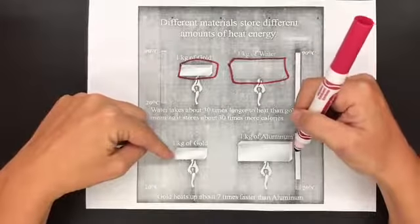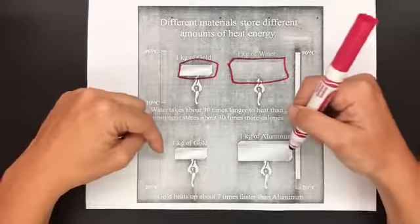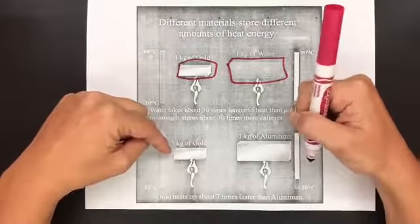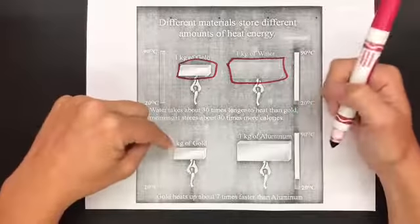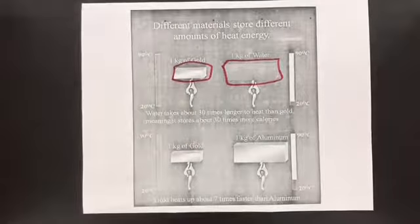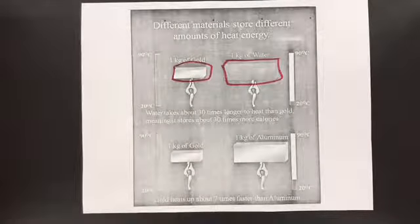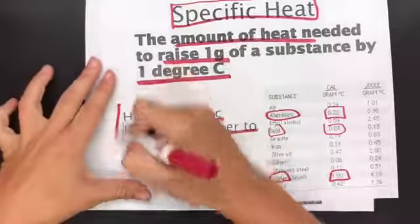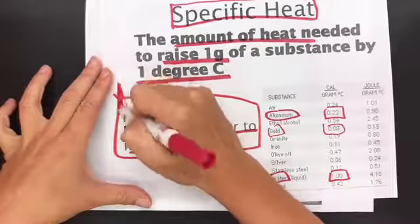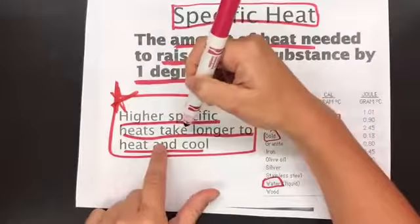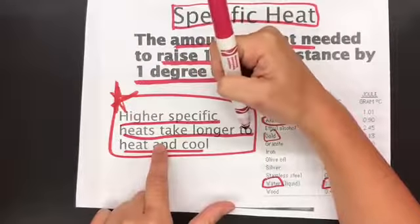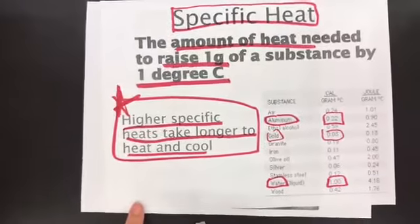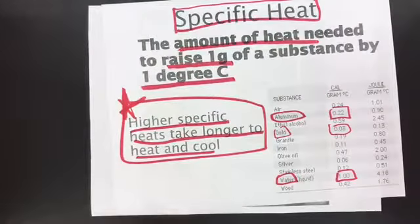And then gold and aluminum, same thing. Aluminum is going to take a little bit longer than gold is. It heats up quick. So that just means, again, let me go back to this slide real quick. Right here, this is the key to this. The higher the specific heat, the longer it takes. The lower the specific heat, the quicker it is because it takes less heat for it to heat up.